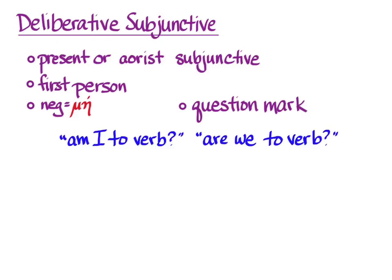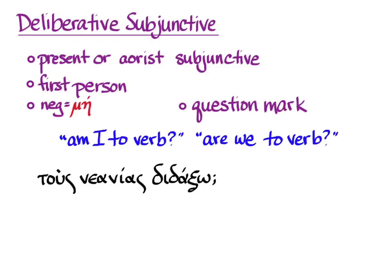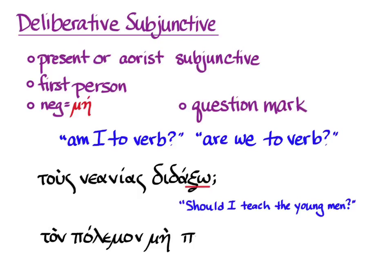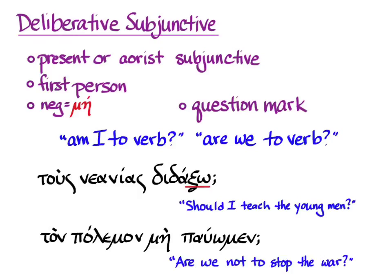The default translation is 'am I to verb?' or 'are we to verb?' For instance, 'tous neanias didaxō?' — 'should I teach the young men?' And 'should' is a perfectly good colloquial English translation for the deliberative subjunctive as well. Again, this could also be the future indicative — 'will I teach the young men?' — so context will have to tell you. Another example: 'ton polemon mē pausōmen?' — 'are we not to stop the war?' With the deliberative subjunctive, you can mull over any possible action.